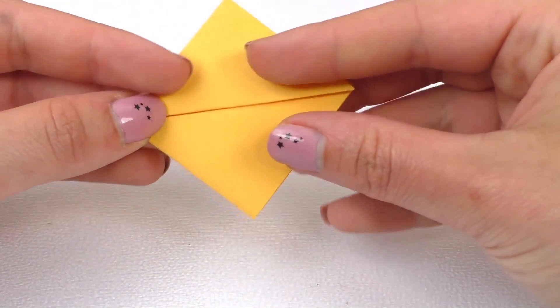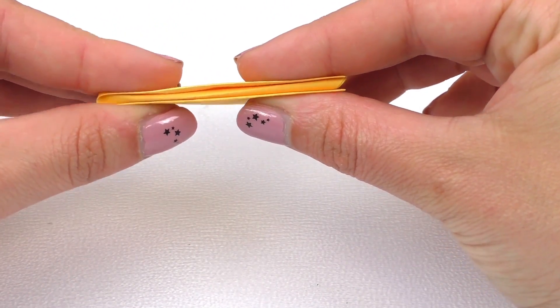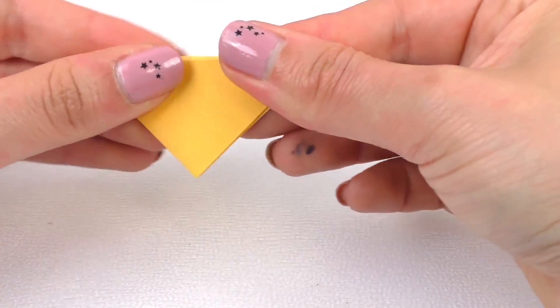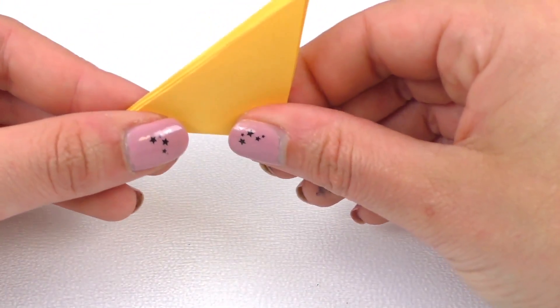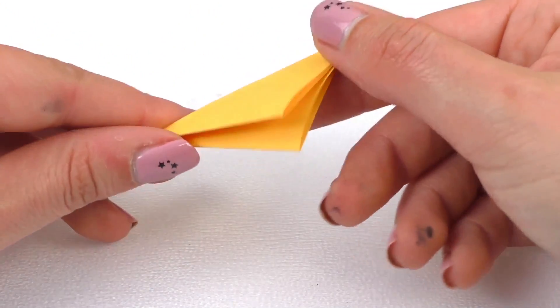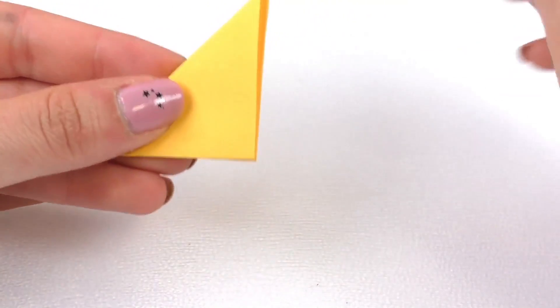We want to fold right through the middle, just like this, to end up with an even smaller triangle. Let's mark the folds really well. Now we end up with three different layers, just like this.